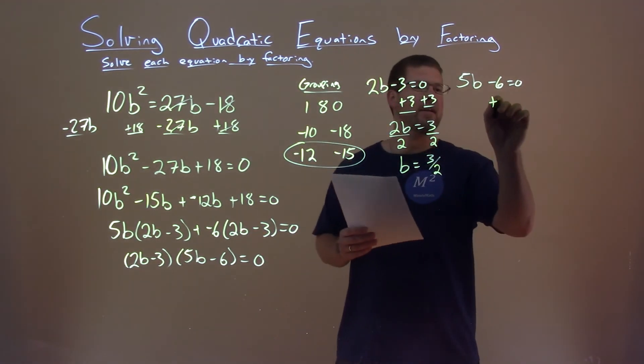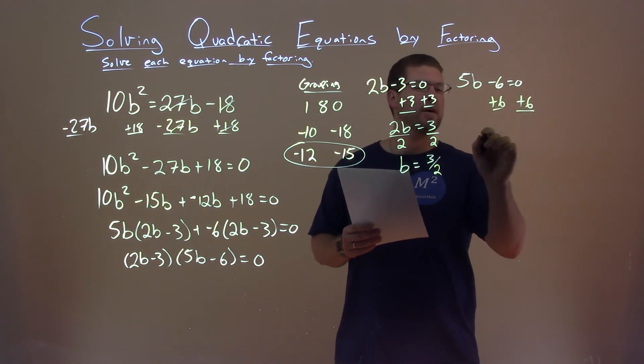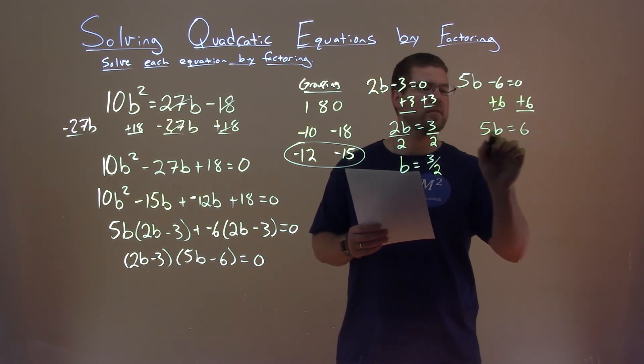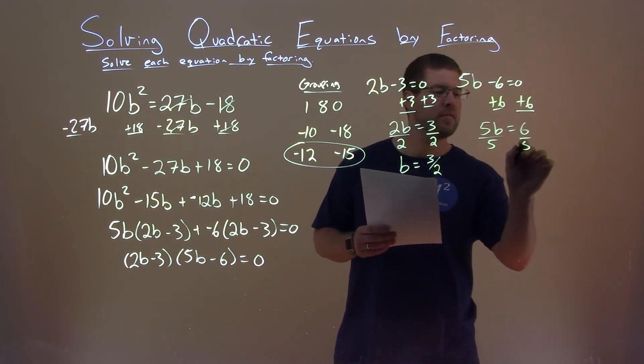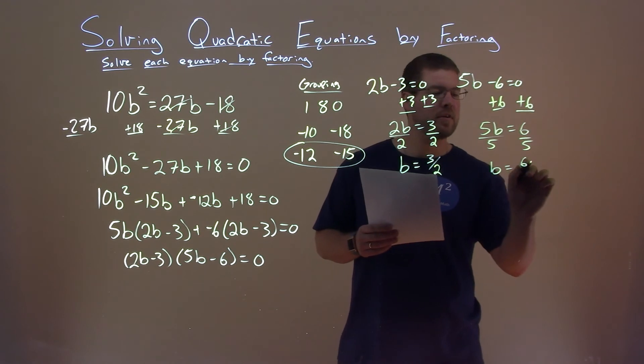We're going to do the same thing here. Add a 6 to both sides, 5b equals 6, divided by 5 to both sides, and b equals 6 fifths.